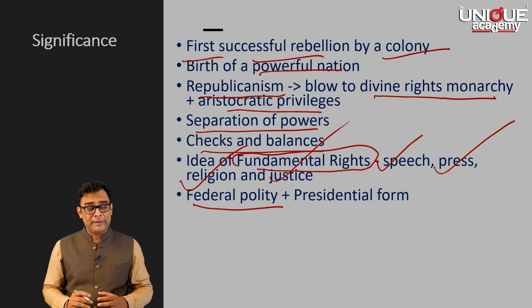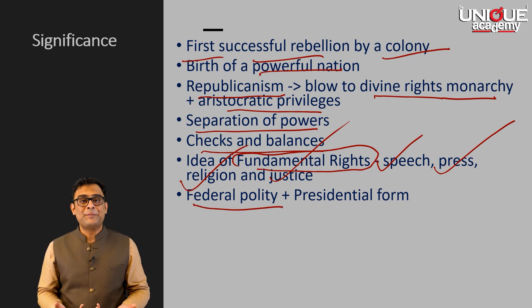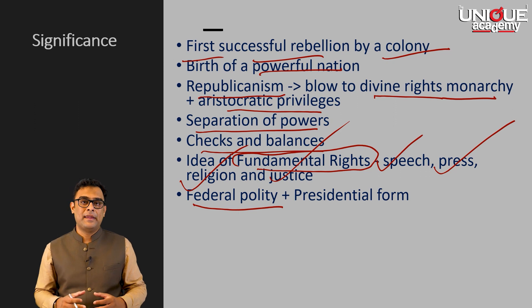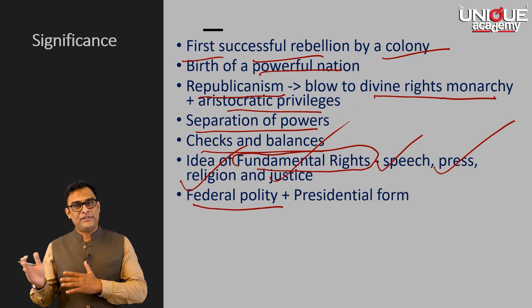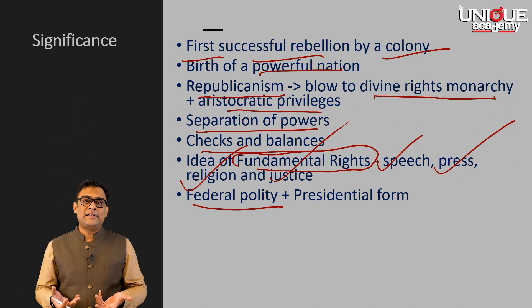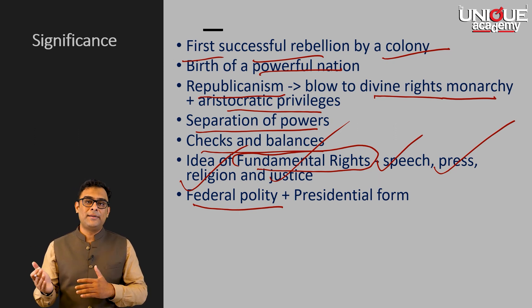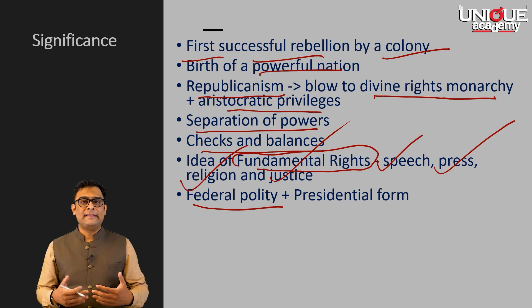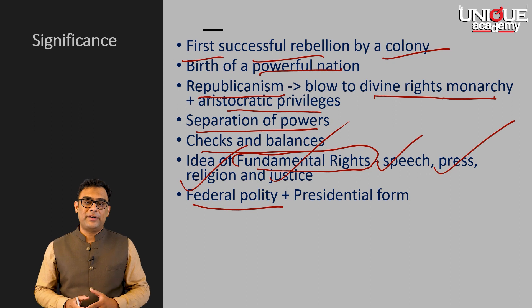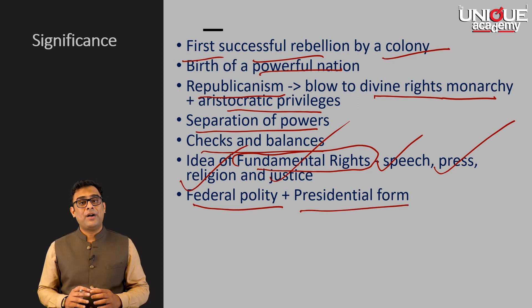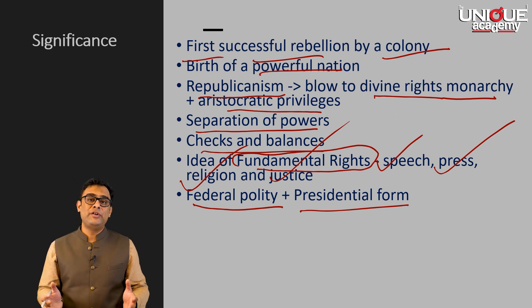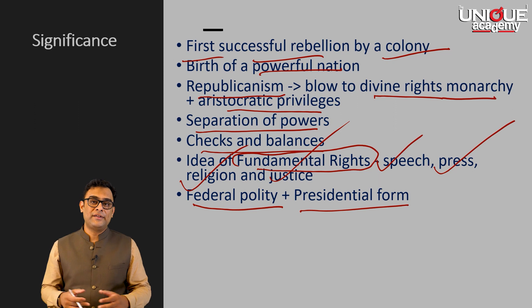It created a new kind of federal polity based on its unique situation. Since these colonies had a virtually independent political trajectory before the war, it necessitated a compromise where power was shared between the federal government and the colonies. This led to a very unique model which we today famously know as the federal polity. It also gave a presidential form of democracy, which was very important to maintain the unity of all of these new states.